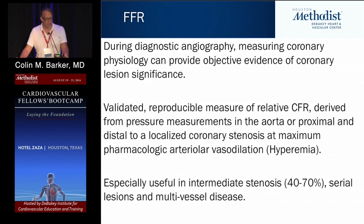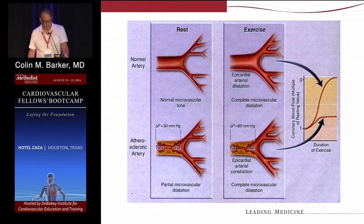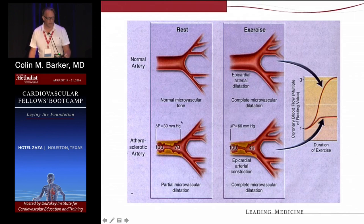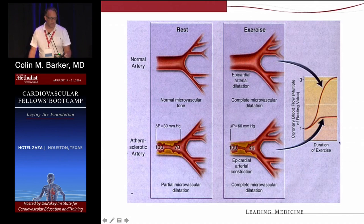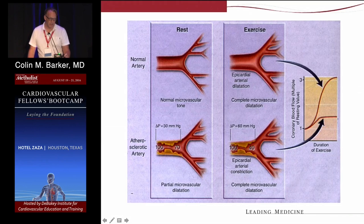Here's a cartoon showing what we're assessing — coronary flow reserve. On top you have a normal artery, on the bottom a diseased artery. At rest, both have basal coronary flow reserve at one — normal. But when you exercise and want to increase coronary flow, the normal artery increases flow threefold, whereas the diseased artery can only increase it to about 1.5 to 1.8 fold. This is the physiologic issue we're trying to figure out in the cath lab.